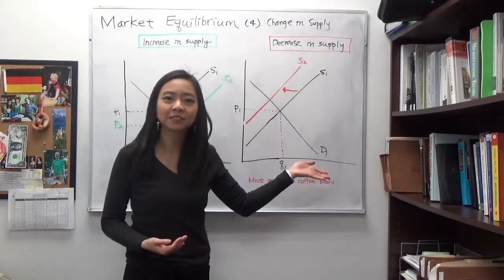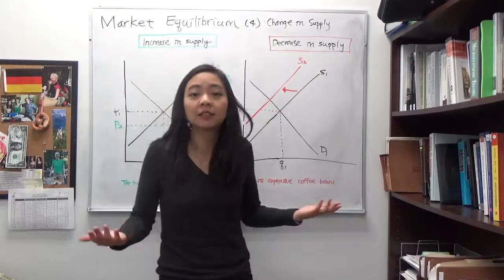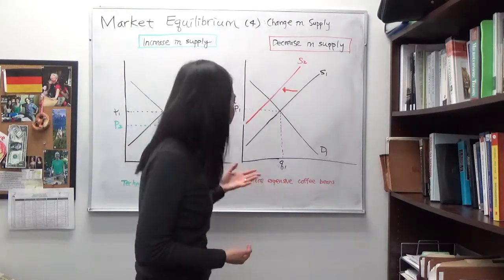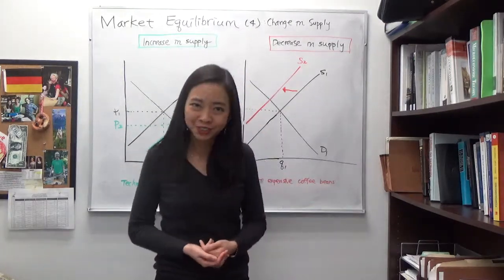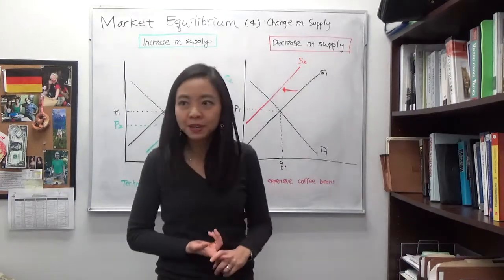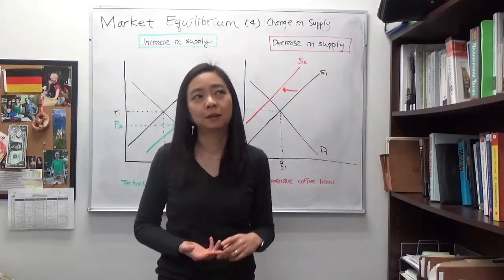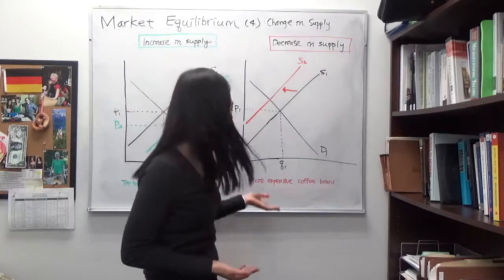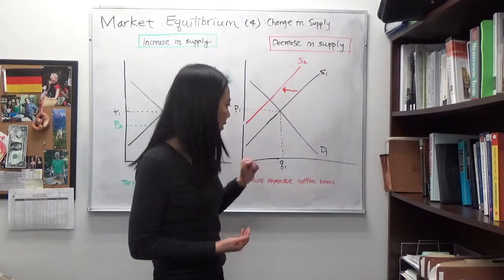What happens if there's a decrease in supply? Remember there are a lot of supply shifters, and one of them being the price of resources. Now to make cappuccino, you will need to use coffee beans, labor, milk, and so on and so forth.